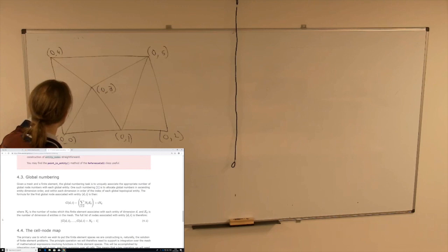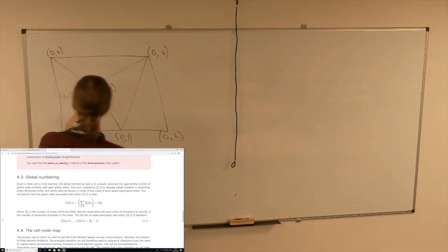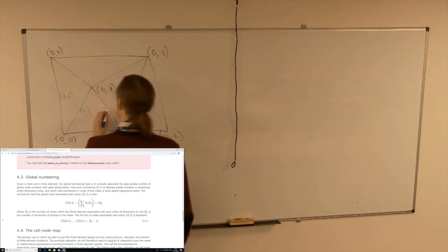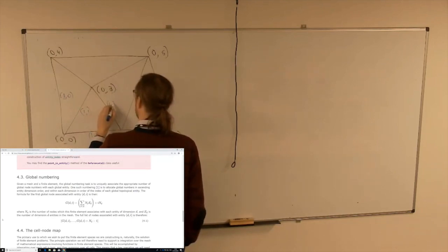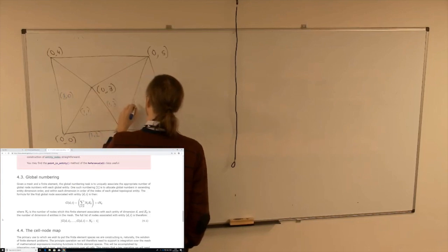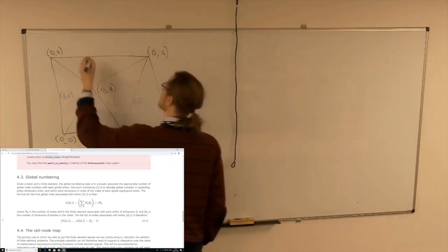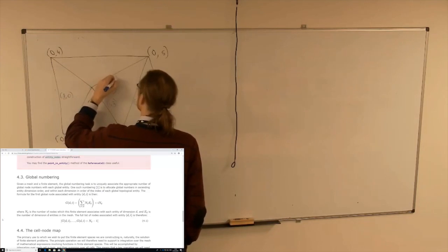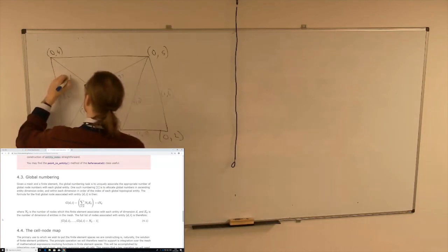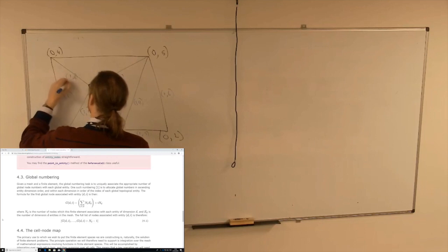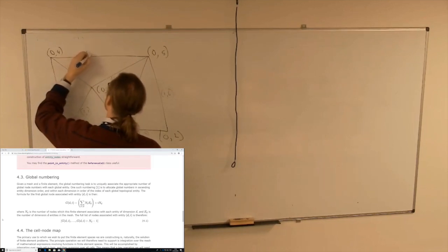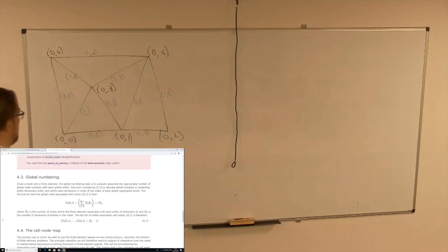The edges will start with ones because they're one-dimensional: (1,0), (1,1), (1,2), (1,3), (1,4), continuing through (1,7), (1,8), (1,9). Did I get them all? I think so. So now I've numbered every edge.